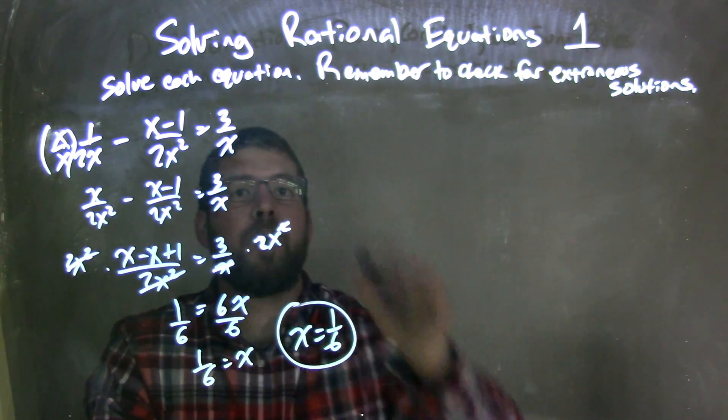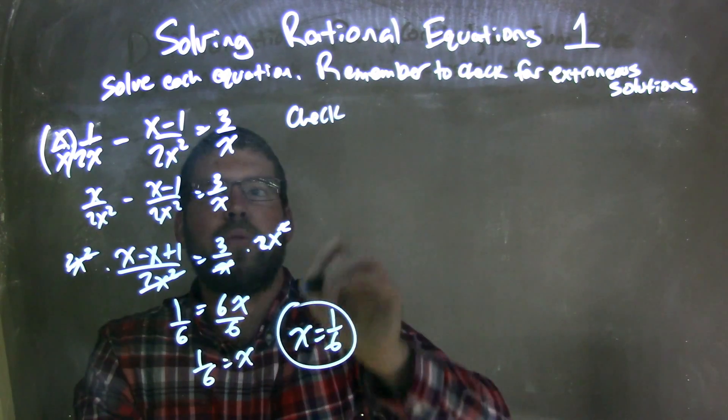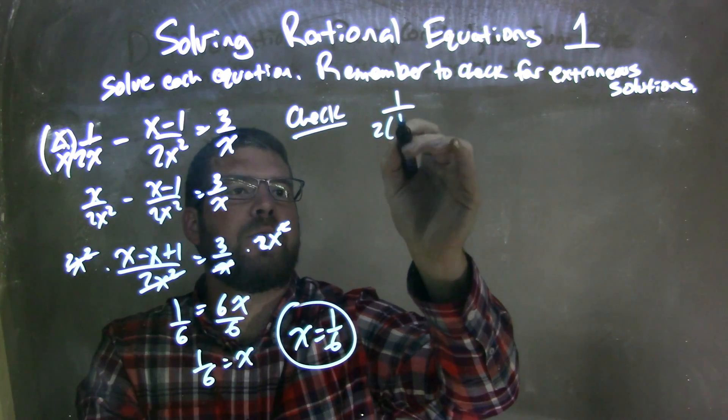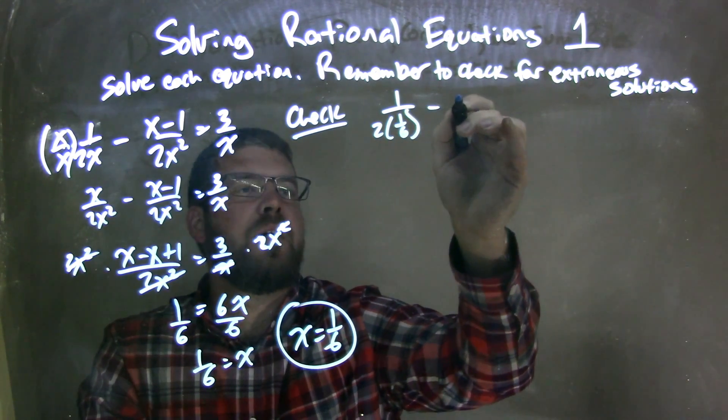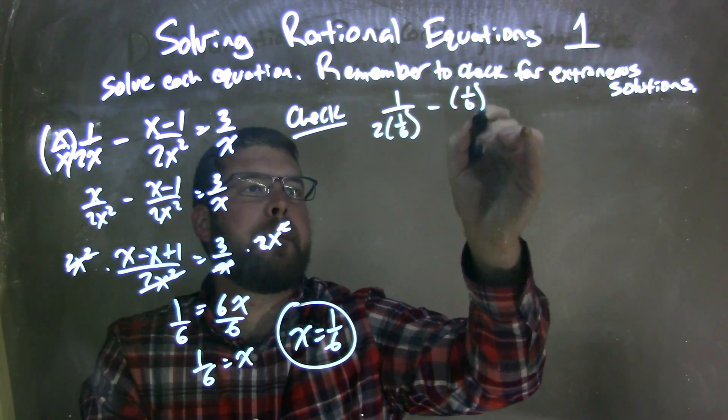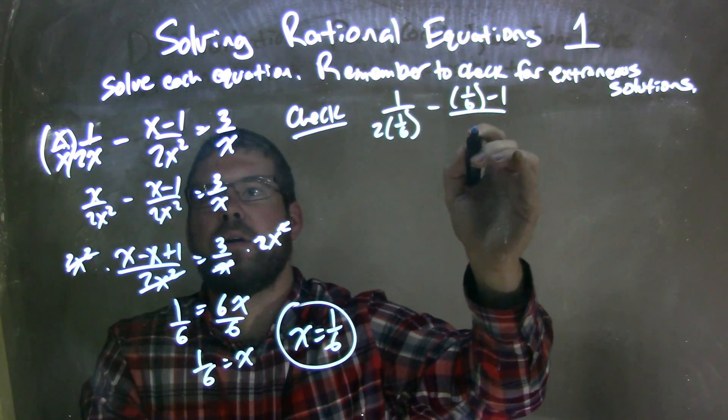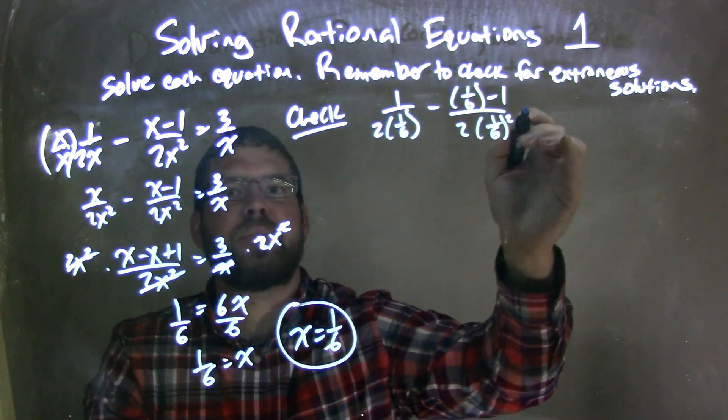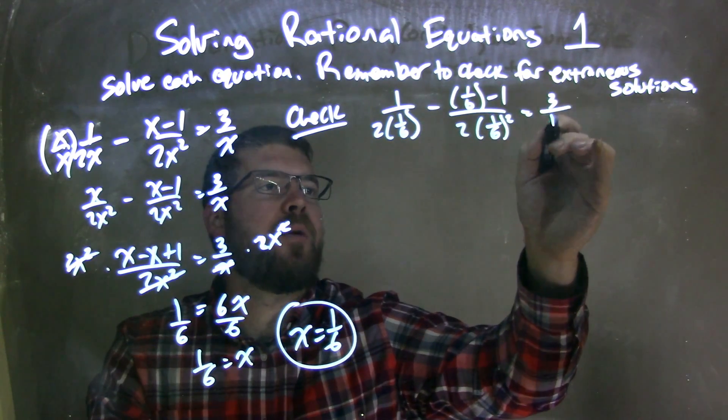So now I've got to check my work. I'll plug 1 sixth for every single time I see an x. So I have 1 over 2 times 1 sixth minus 1 sixth minus 1 over 2 times 1 sixth squared equals 3 divided by 1 sixth.